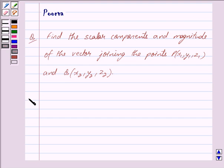Let us now begin with the solution. We are given the two points as P with coordinates x1, y1, z1 and Q with coordinates x2, y2, z2.